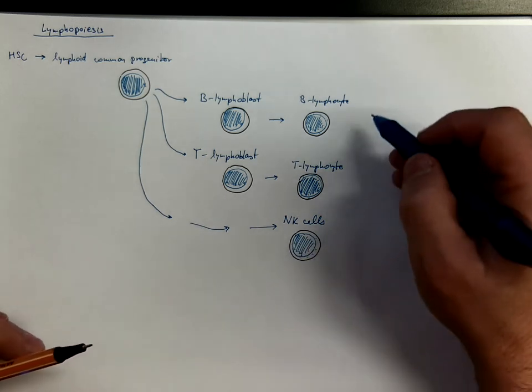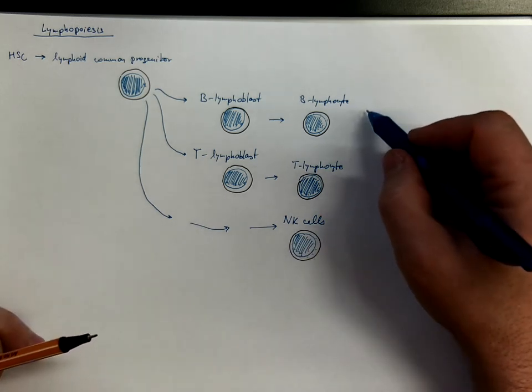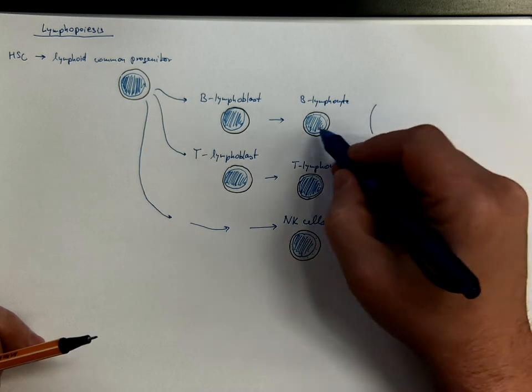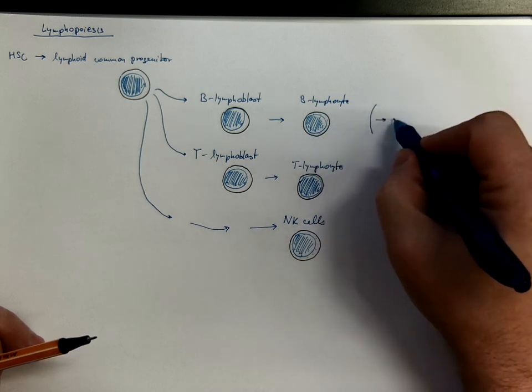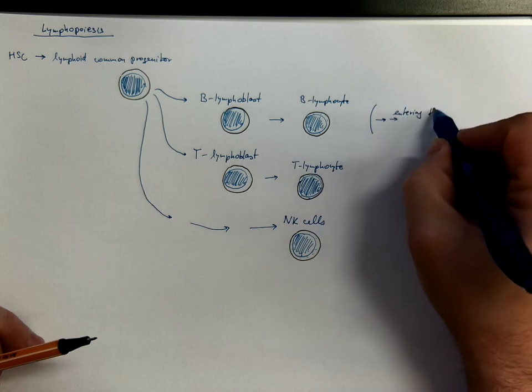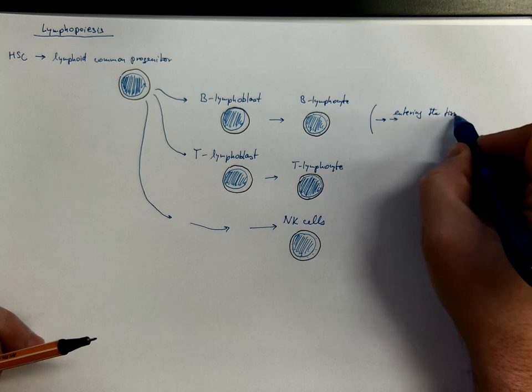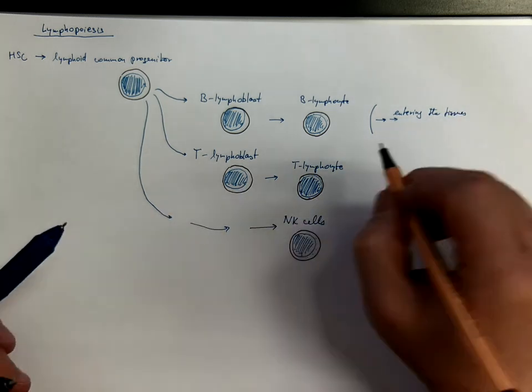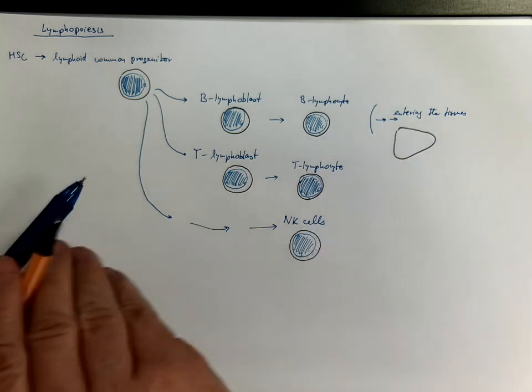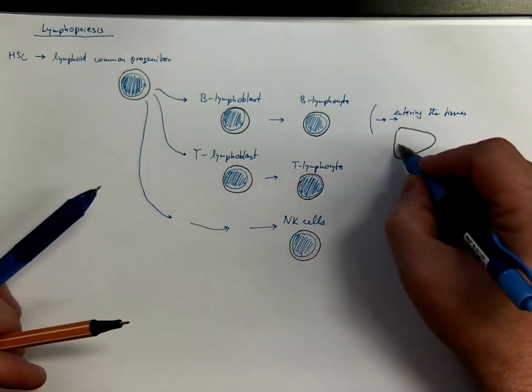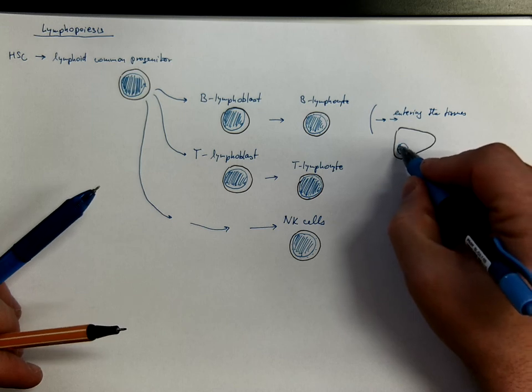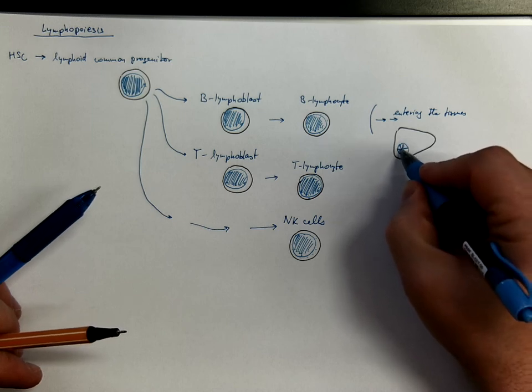And although it is not part of lymphopoiesis anymore, let us remind of the fact that the B lymphocytes are entering the tissues and differentiating into the plasma cells with their eccentric nucleus with a clock-phase distribution of chromatin.